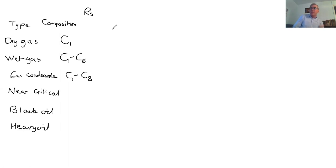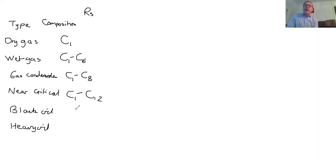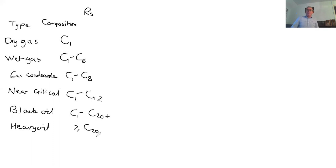A near critical oil will have a range of hydrocarbons but tends to be quite light, say C1 to C12 (dodecane). A black oil will range from C1 all the way to C20+. A heavy oil normally doesn't contain any lighter components — just the longer-chain hydrocarbons. That gives you some idea of composition as guidelines.